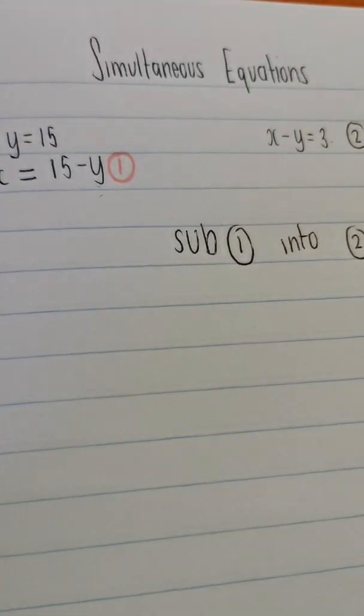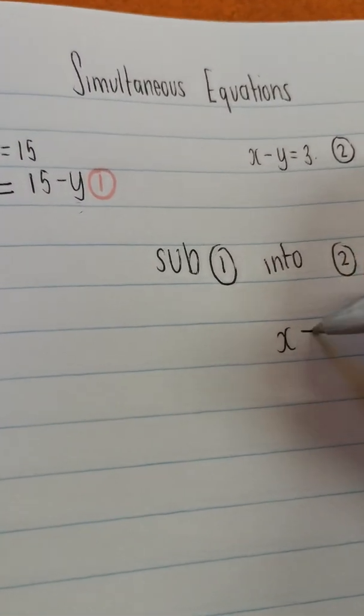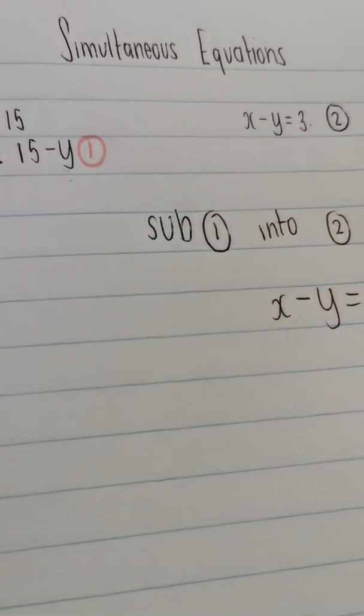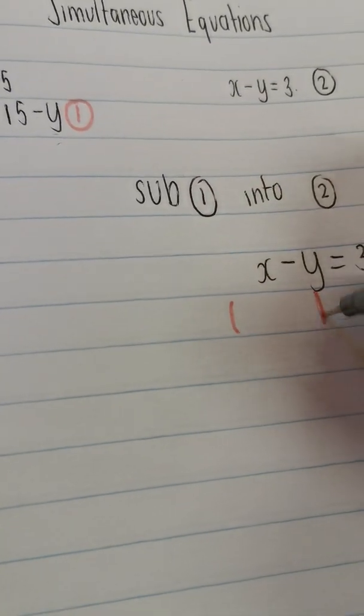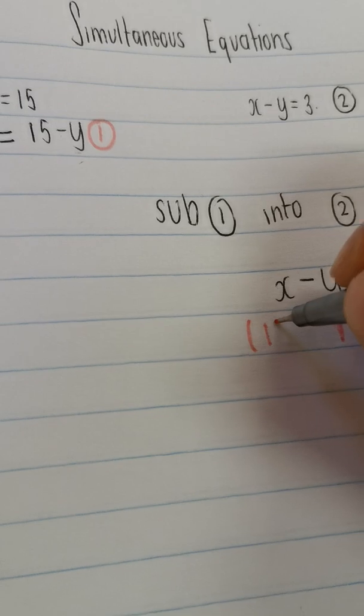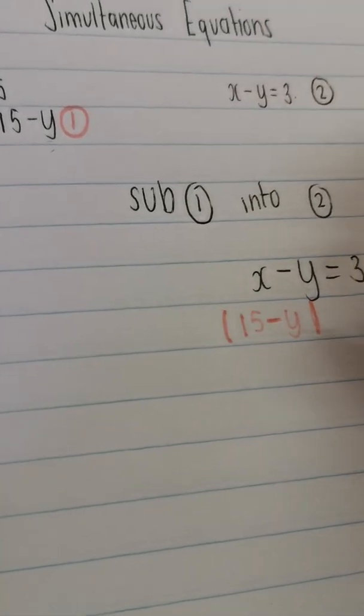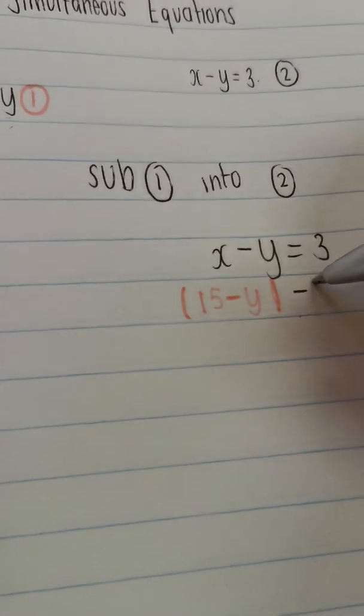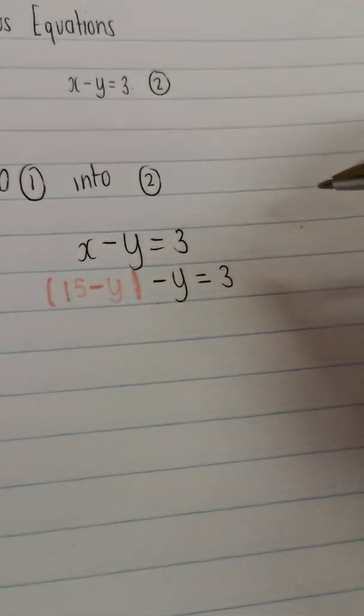So, I'm going to use color so that you can see exactly what I mean. Let me just rewrite this equation for you. So, x minus y equals 3, which means I see x, so I'm going to replace it with 15 minus y. I've replaced it. Then there's the negative y over there. Then it's got an equal to sign, and then it's got a 3. That's what it is.